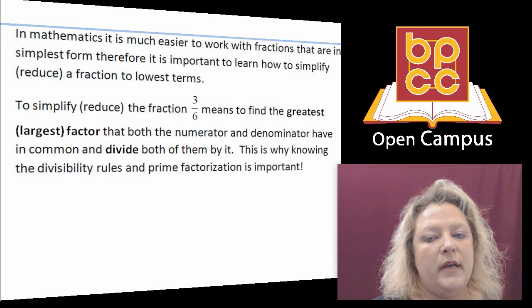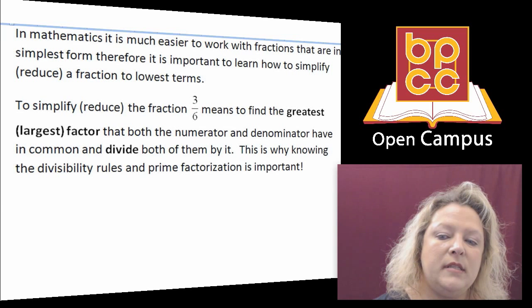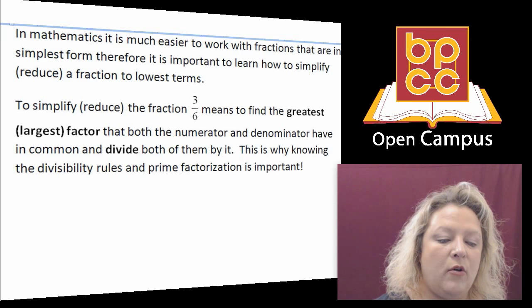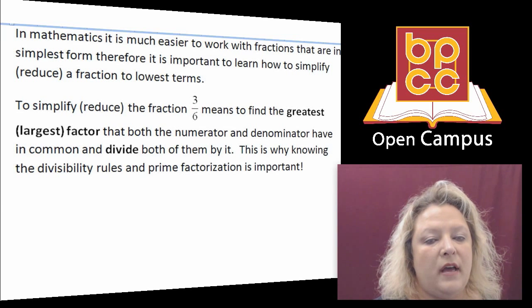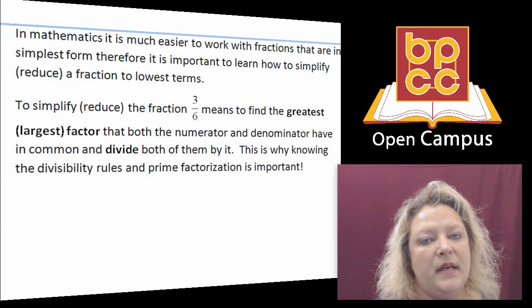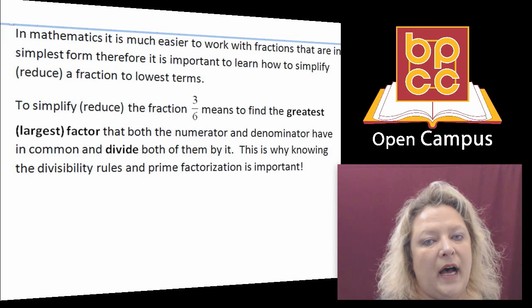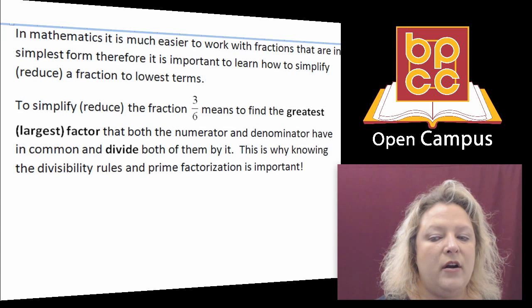So we need to put them in simplest form, and when we put them in simplest form, that is called reducing, and the way we do that is to find their greatest common factor. What is that? That means that is the biggest number that will divide into both the numerator and the denominator.